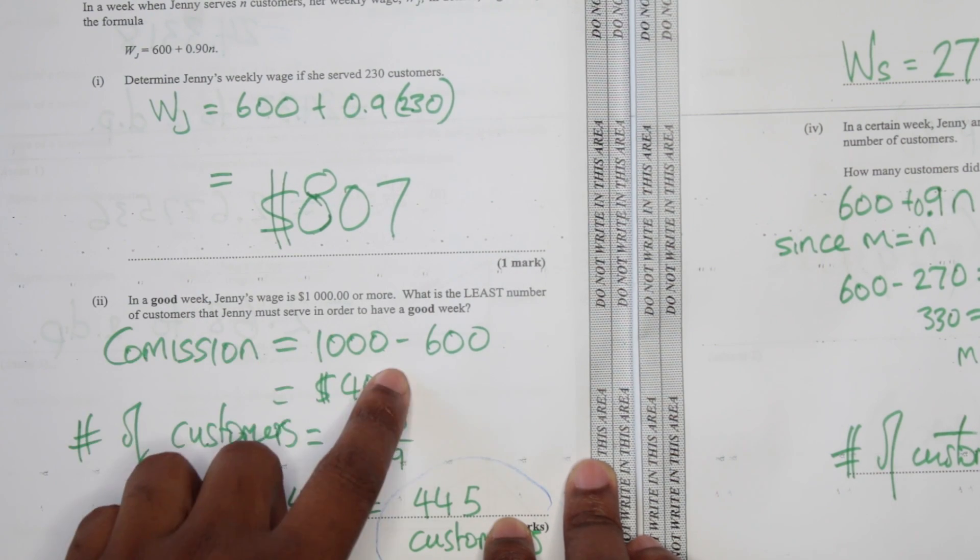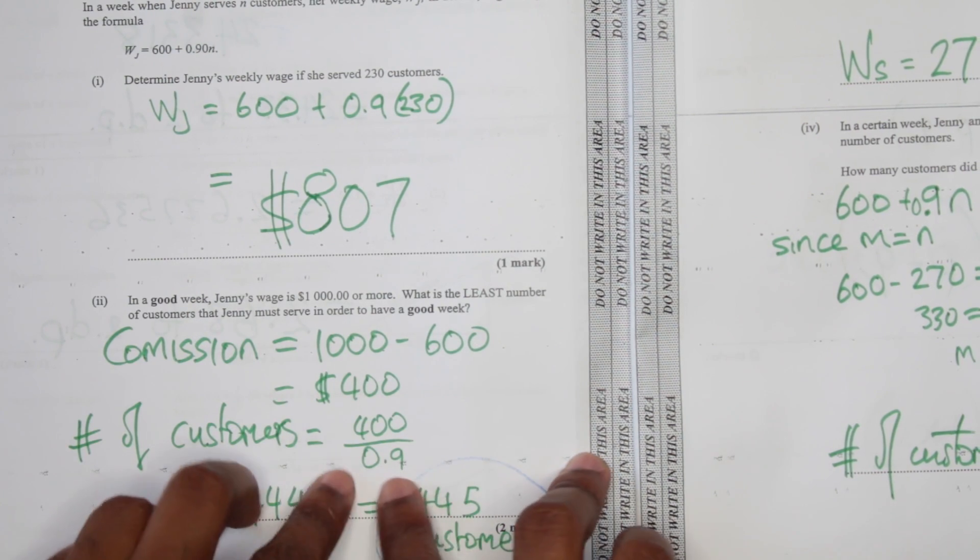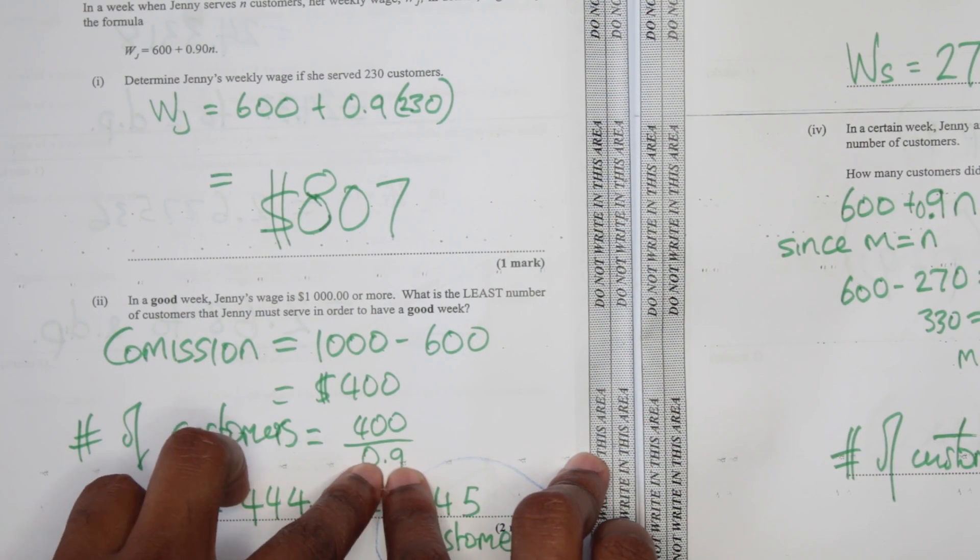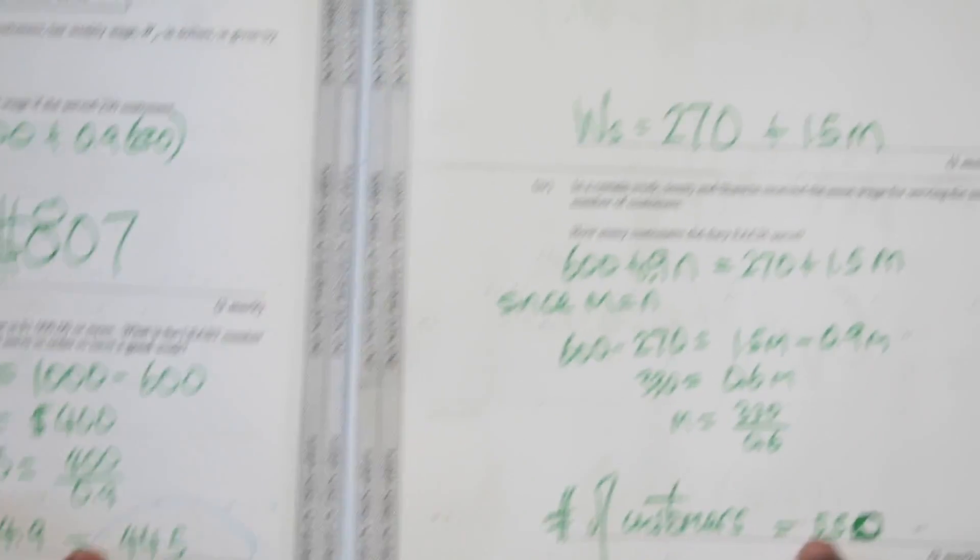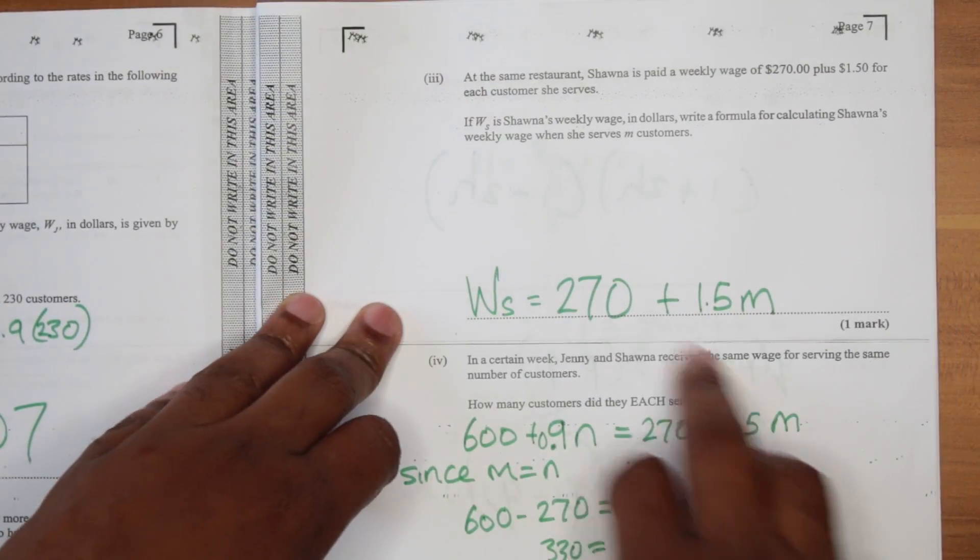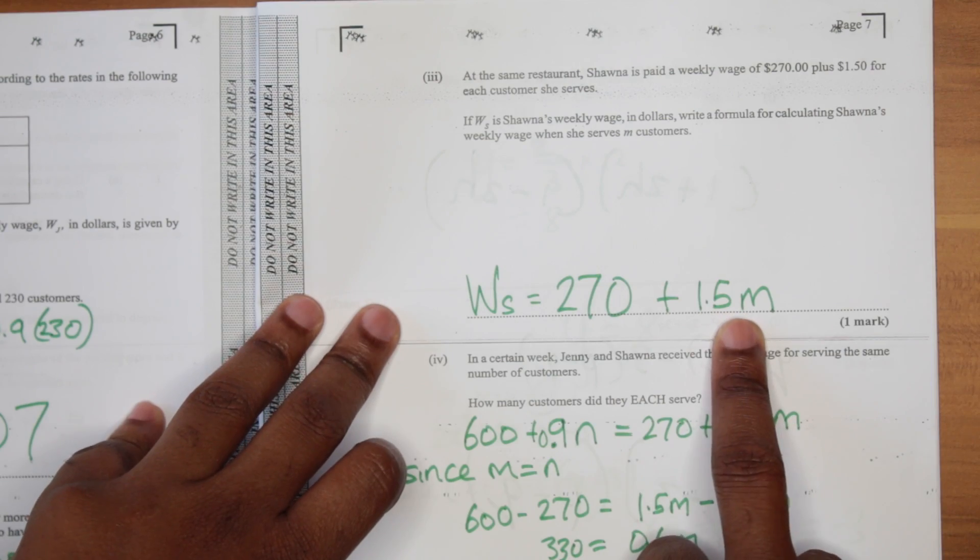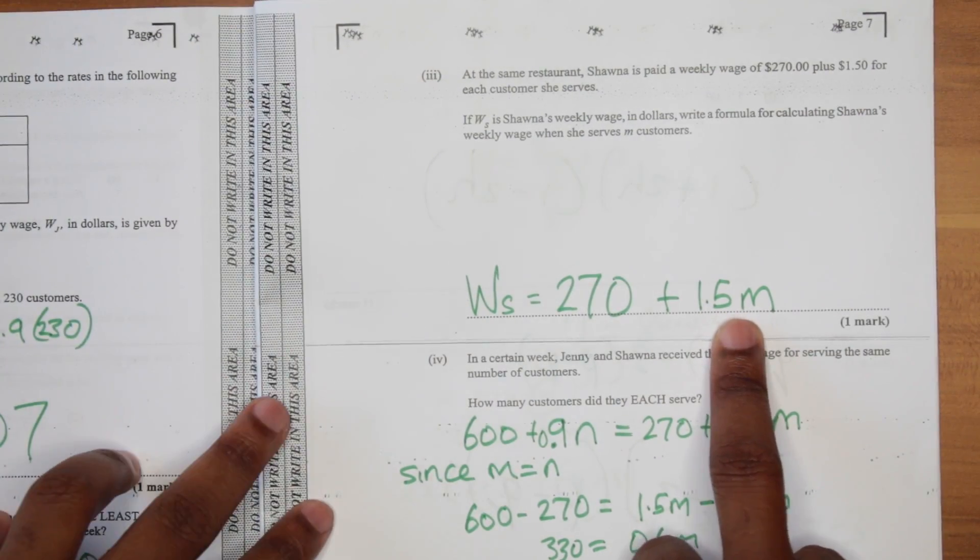Things start to get a little more tough here because we had an equation to use. But you just need to plug in the number of customers, get that number. For the second part, we calculate the wage takeaway, get 400, divide by this one customer commission, and you get 445 customers.